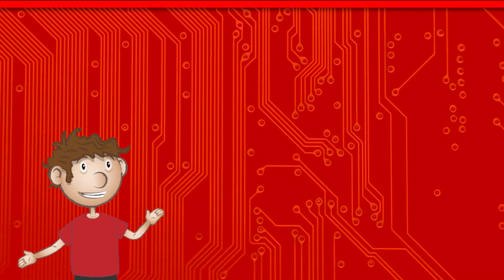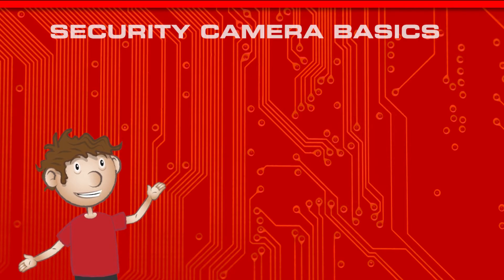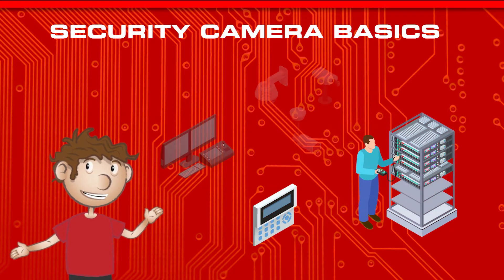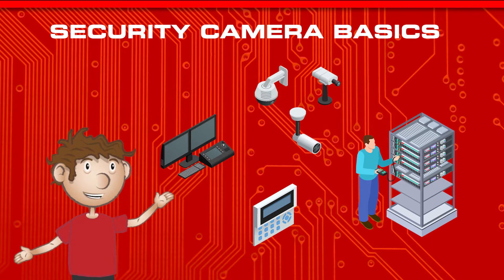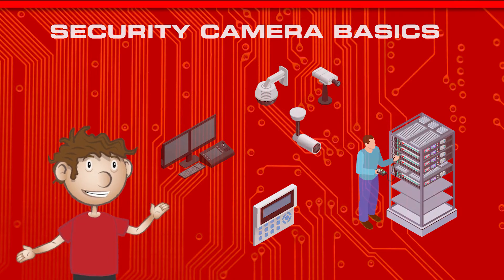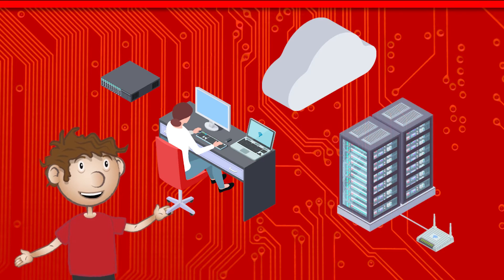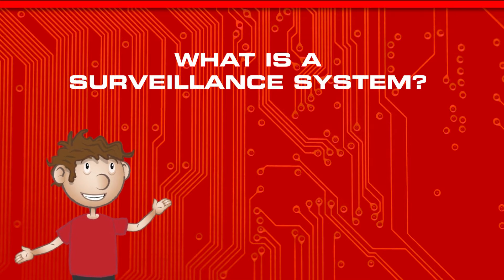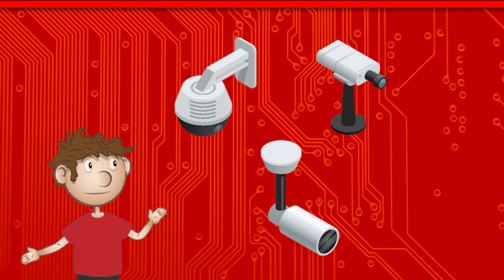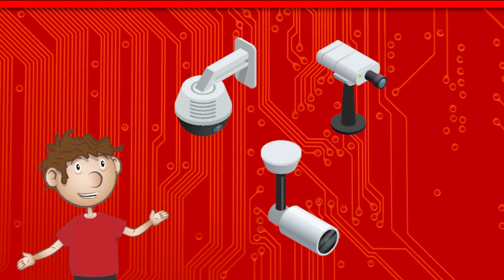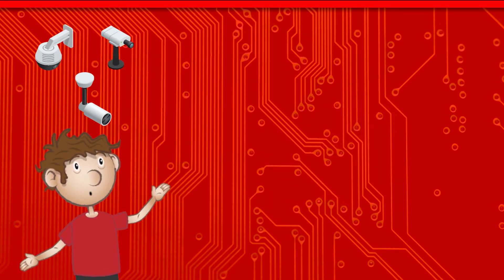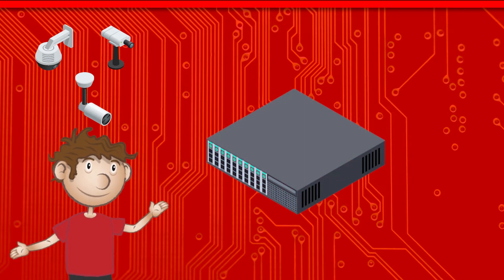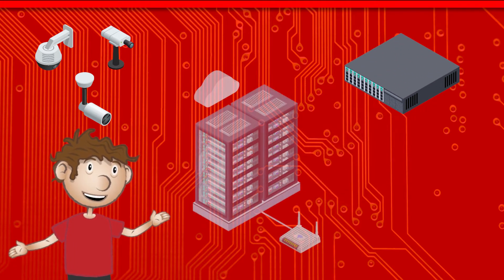In this video, we're going to introduce you to the basics of security cameras by looking at the components that go into creating a customized surveillance solution. Additionally, we will review the benefits of security camera systems and provide an overview of the different types of cameras that exist. A surveillance or closed-circuit television system, better known as CCTV, consists of one or multiple security cameras that can capture and transmit video to a networked video recorder, also known as an NVR, or a local or cloud-based server.